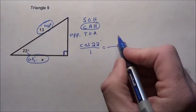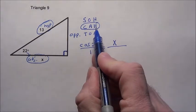The adjacent is my unknown, that's x. So I put x divided by the hypotenuse. In this case, I have 13 as the measurement.